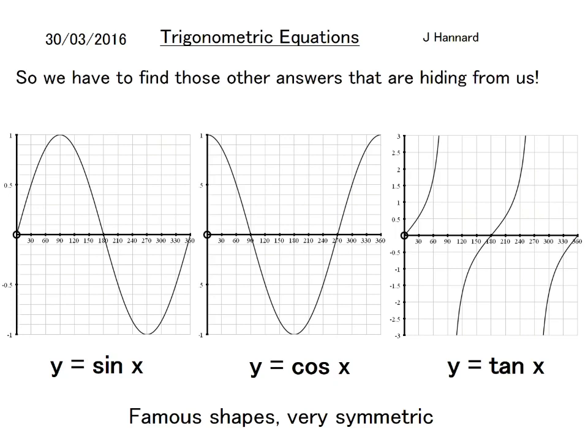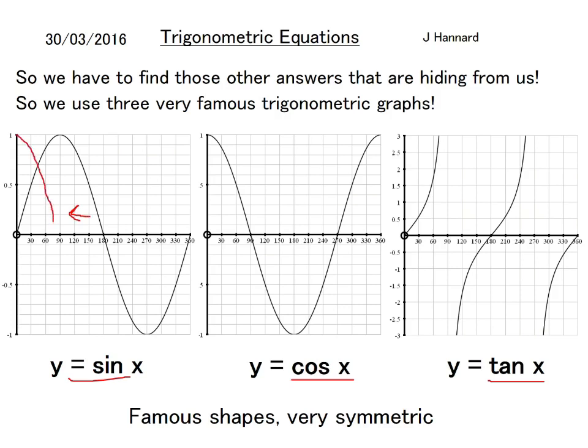But that is not the only answer. Shock horror. We're going to introduce you to something known as the trigonometric graphs. We have to find the other answers that are hiding away from us. These are three very famous shapes: the sine graph, the cos graph, and the tan graph. They're very famous shapes and very symmetric. We actually use these graphs to find the other answers. If you're good with your graphs, the cos graph is the sine graph moved back 90 degrees. Sine and cos are very closely related, but tan's the weird one.